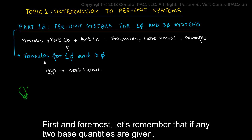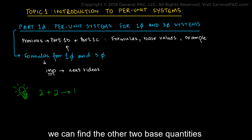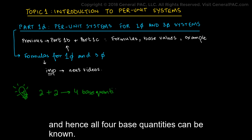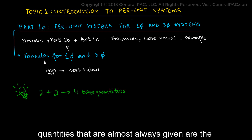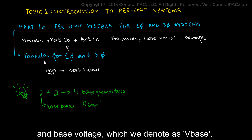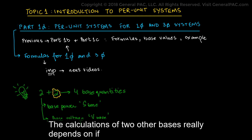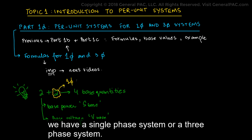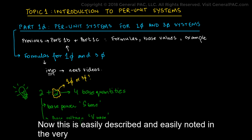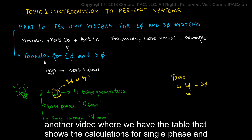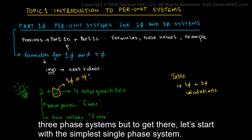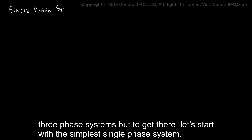First and foremost, let's remember that if any two base quantities are given, we can find the other two base quantities, and hence all four base quantities can be known. In electrical power systems, the two base quantities that are almost always given are the base power, which we denote as S_base, and the base voltage, which we denote as V_base. The calculations of the two other bases really depend on if we have a single-phase system or a three-phase system. Let's start with a simple single-phase system.